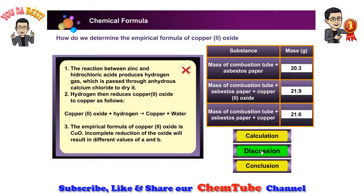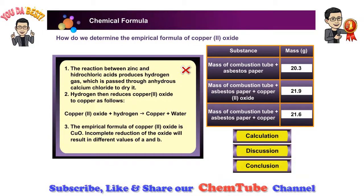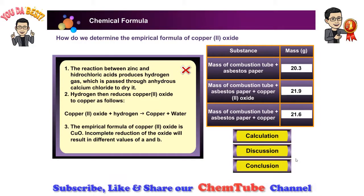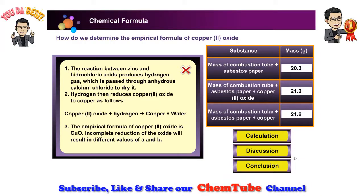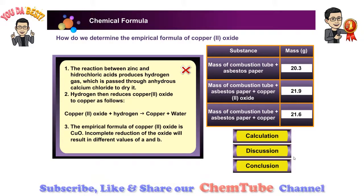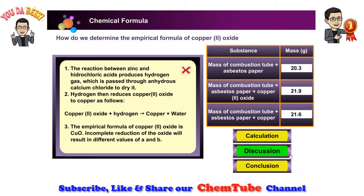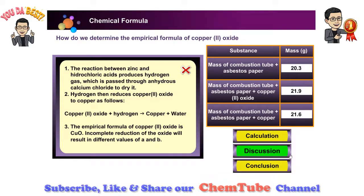The reaction between zinc and hydrochloric acid produces hydrogen gas, which is passed through anhydrous calcium chloride to dry it. Hydrogen then reduces copper-2-oxide to copper. Copper-2-oxide reacts with hydrogen to produce copper and water. The empirical formula of copper-2-oxide is CuO.